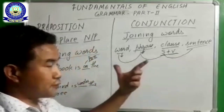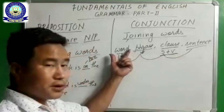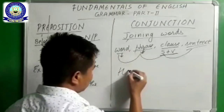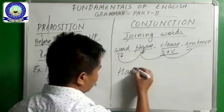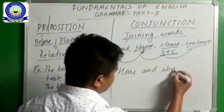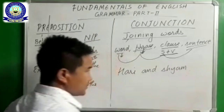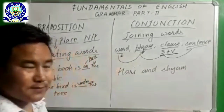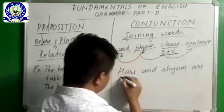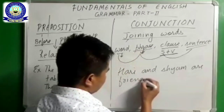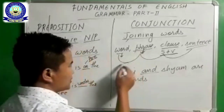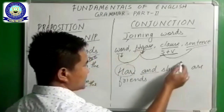If they have to join, they join word to word. For example, 'Hari and Sham are friends' — 'and' is joining two words: Hari and Sham.